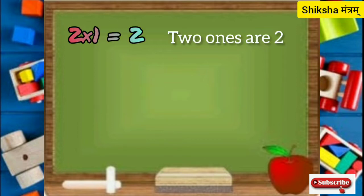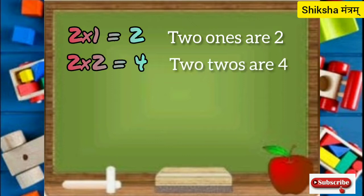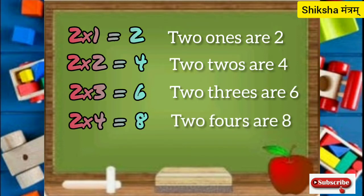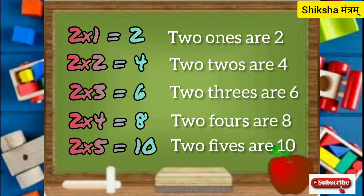2 1s are 2, 2 2s are 4, 2 3s are 6, 2 4s are 8, 2 5s are 10.